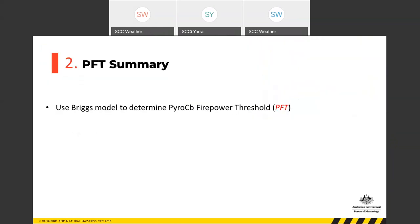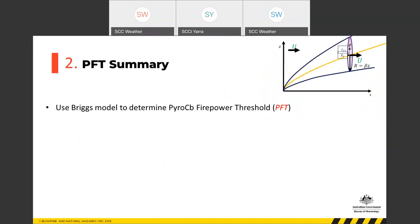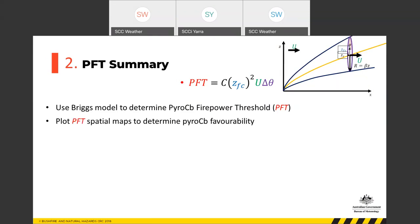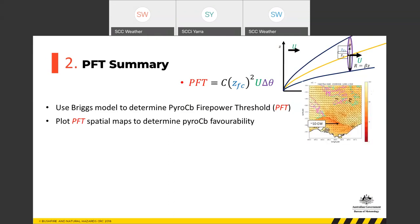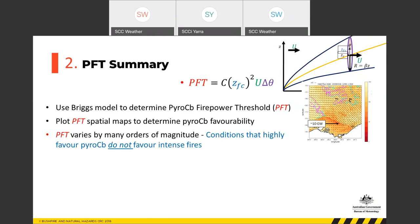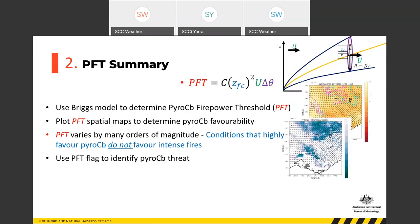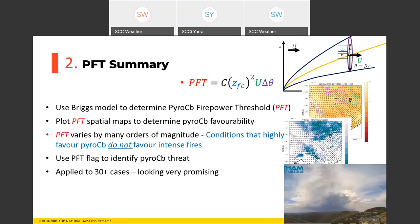To summarise Part 2: the Briggs model is used to determine the PFT, with PFT proportional to ZFC squared times wind speed times delta theta. Spatial maps are plotted to determine Pyro CB favourability. The issue that high-PFT environments don't always produce intense fires led to the development of the PFT flag. The tool was applied to approximately 30 case studies with promising results, and is now being applied as an experimental real-time forecast diagnostic.